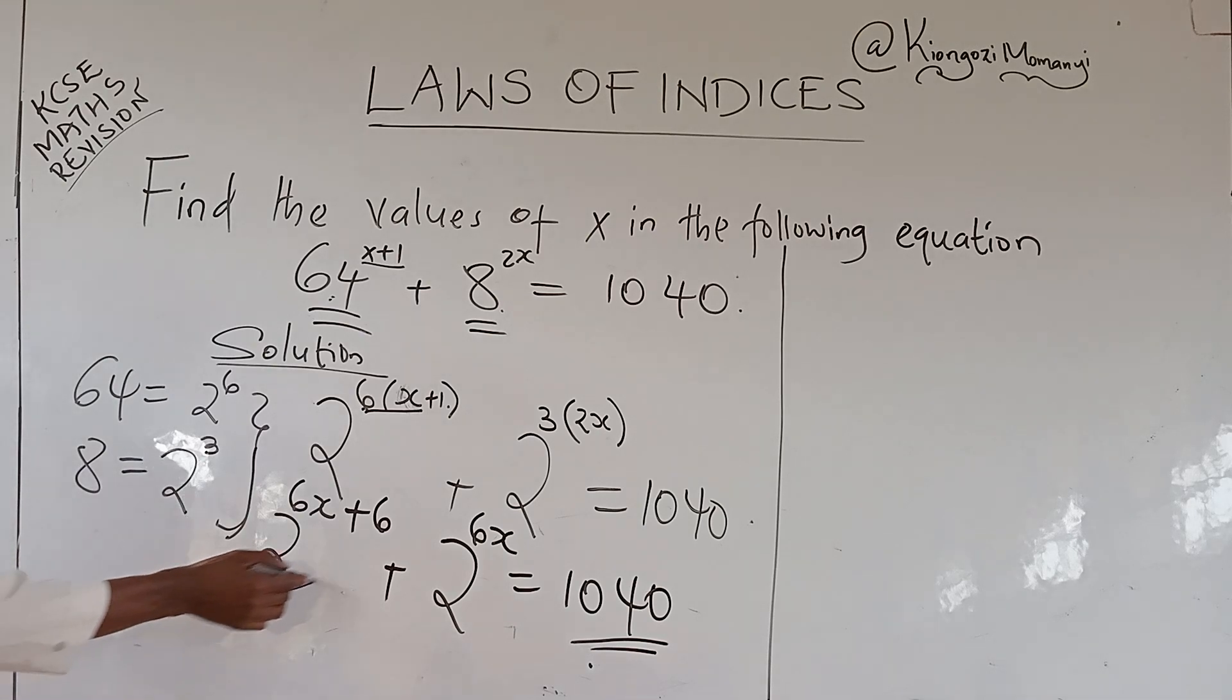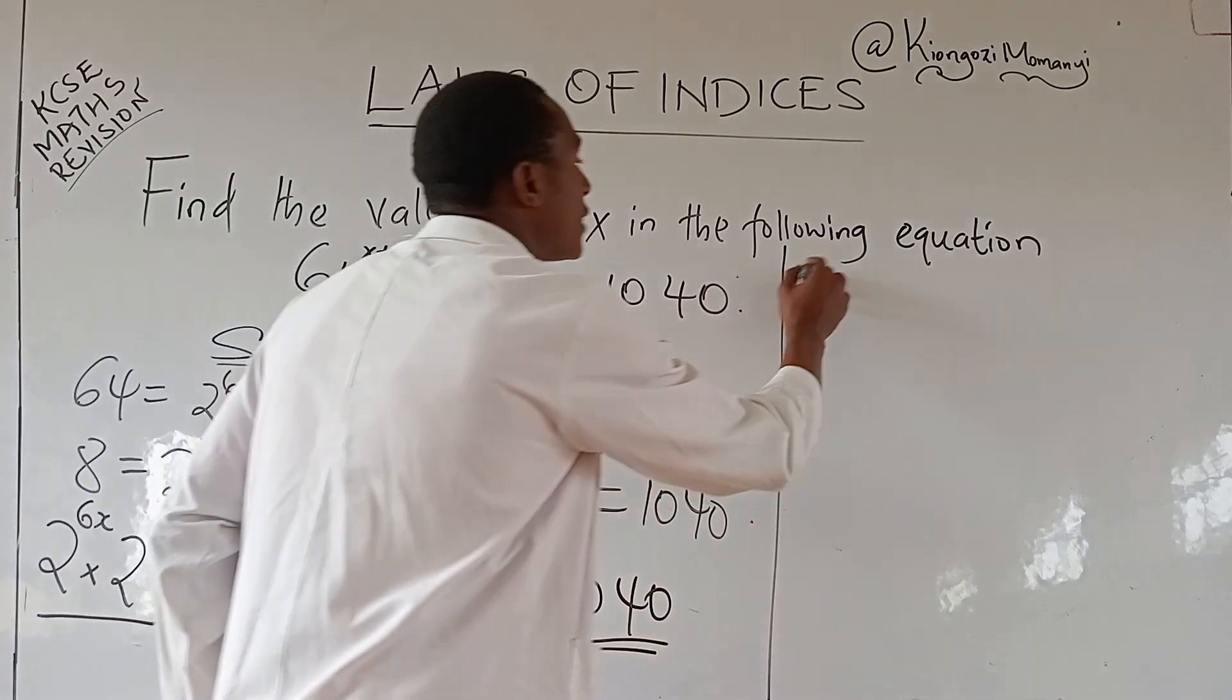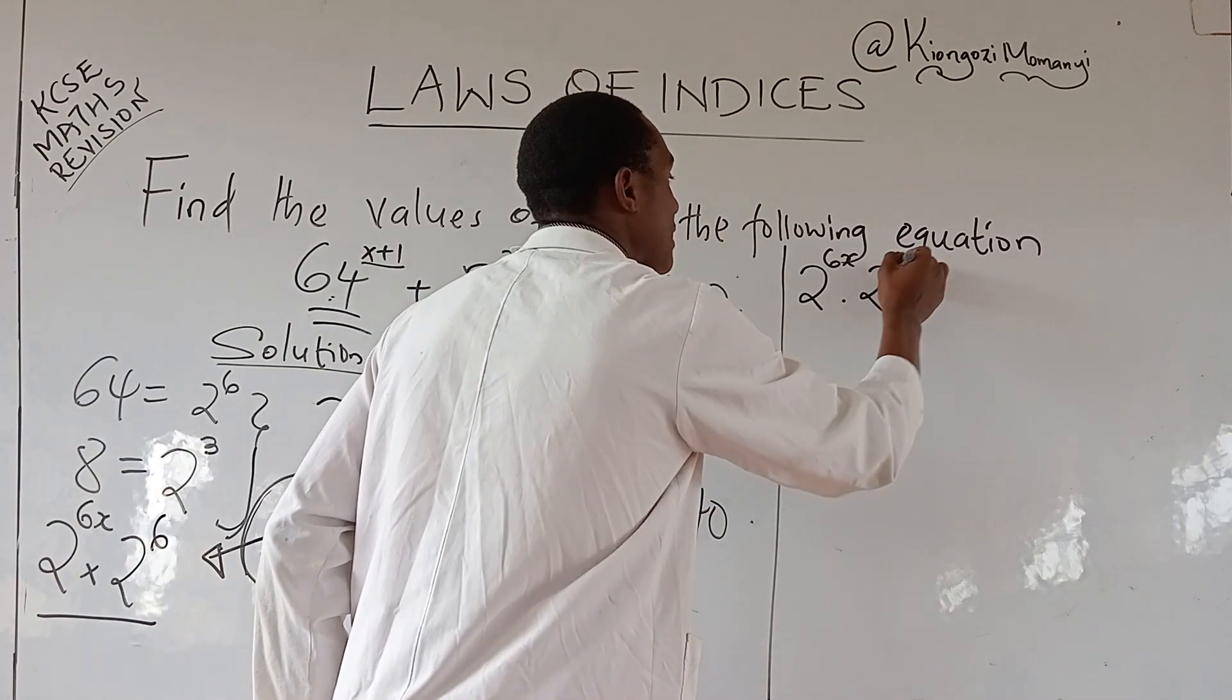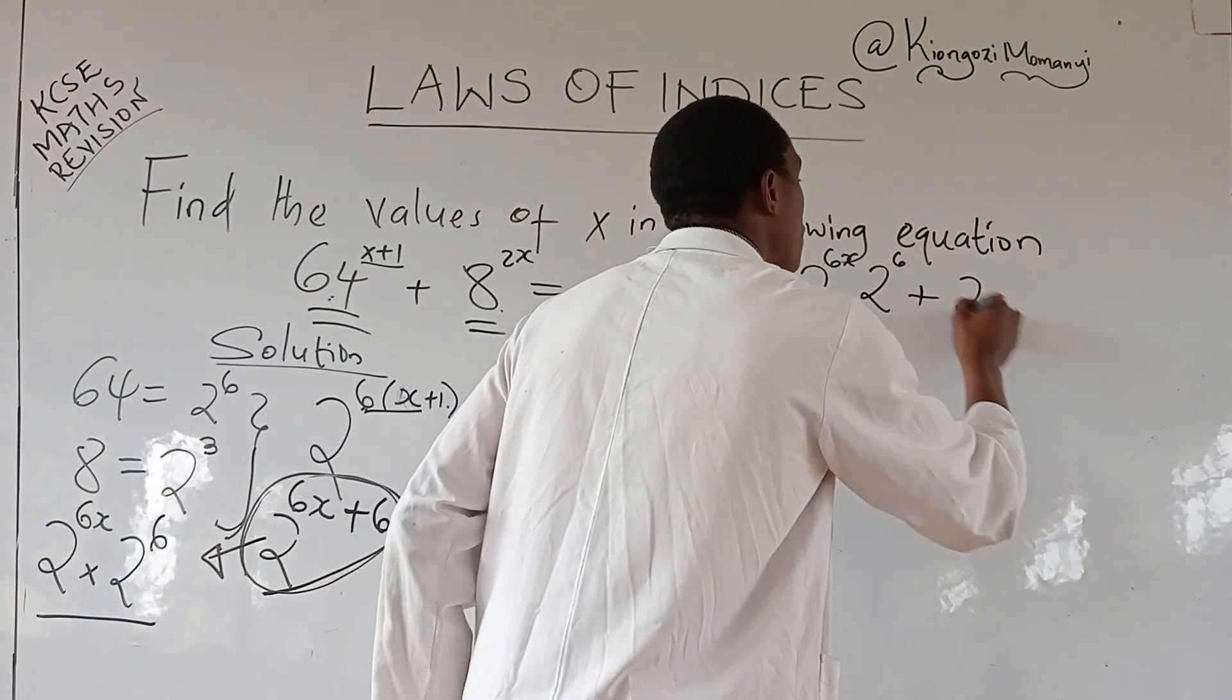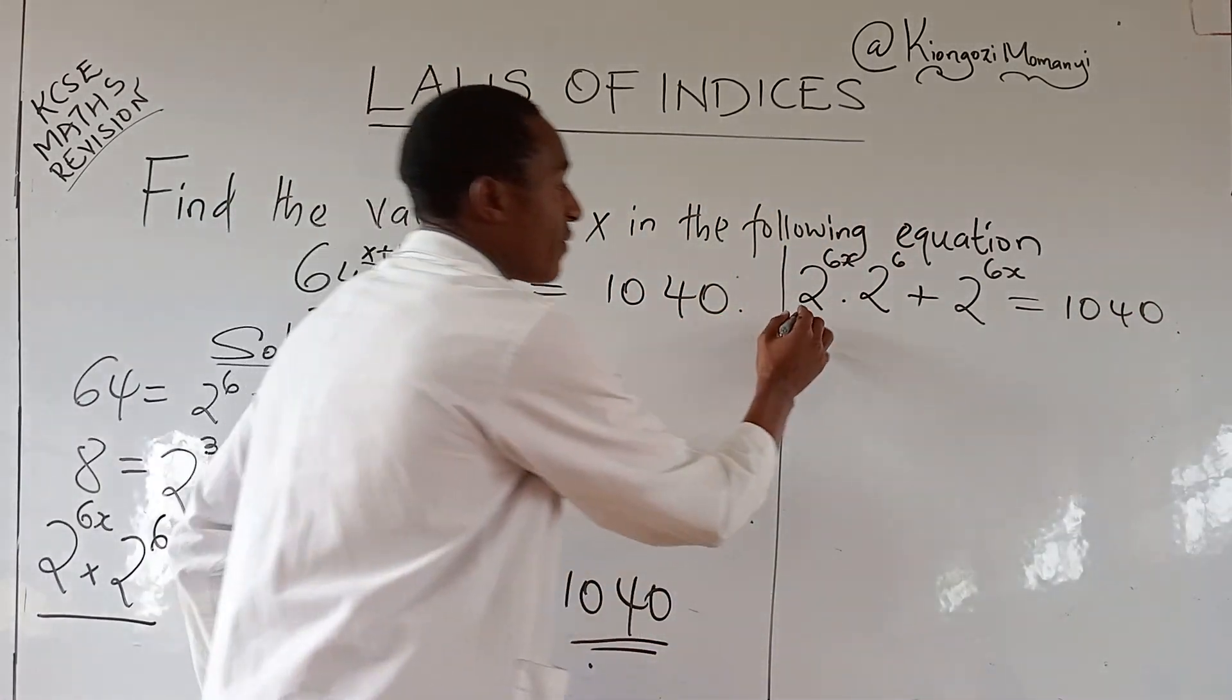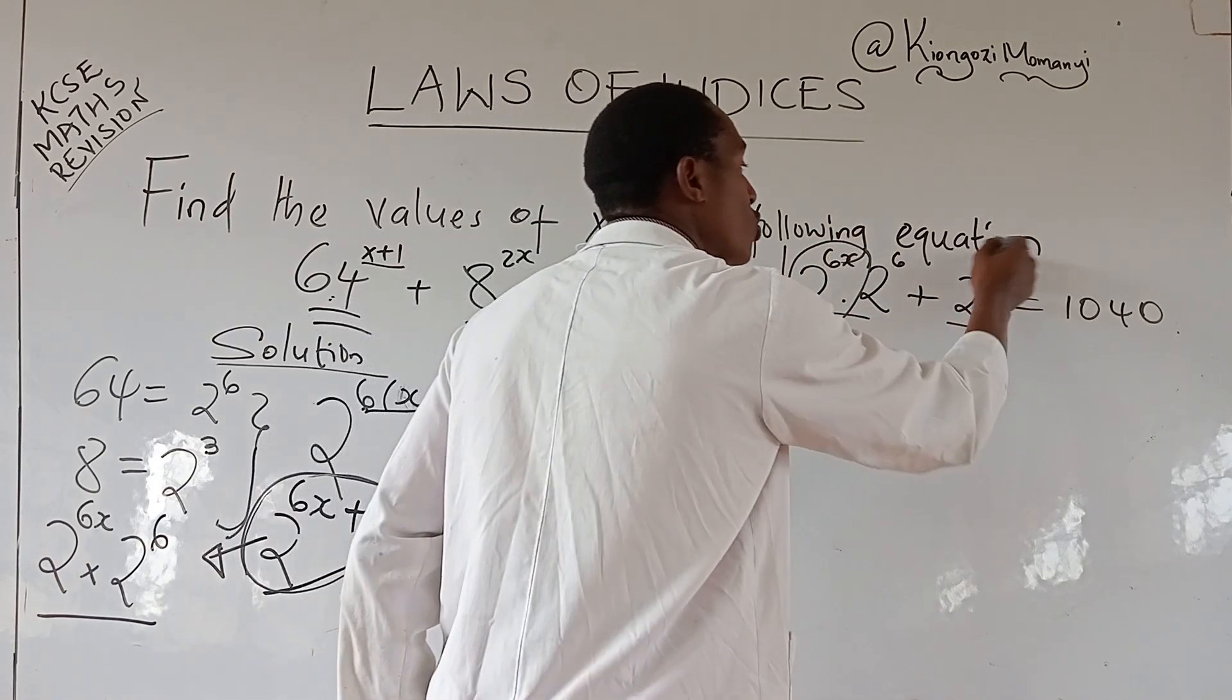Now in this case, we need to understand what has led to this compound power here. If you take it back and try to disintegrate it, you realize that 2 was raised to power 6x, and that was multiplied by 2 raised to power 6. Because it was a multiplication, then the powers were added. So you try and disintegrate this complex base power there. So what you have is going to be 2 power 6x times 2 power 6, then plus 2 power 6x, then is equals to 1040. There is a common value, there is a common term.